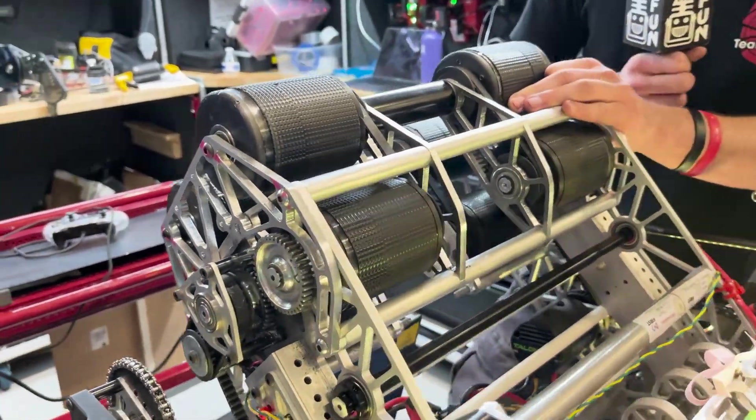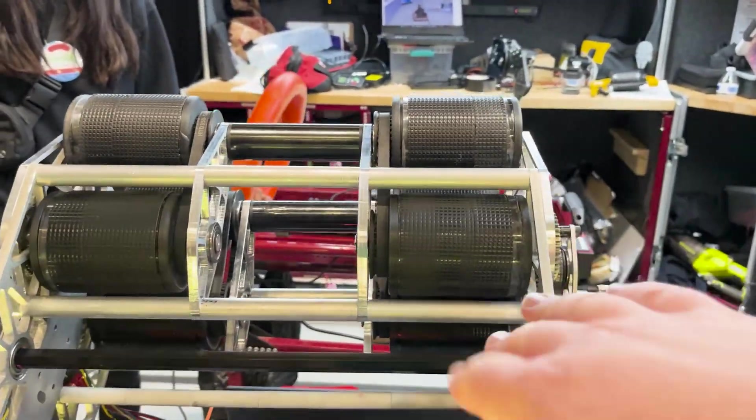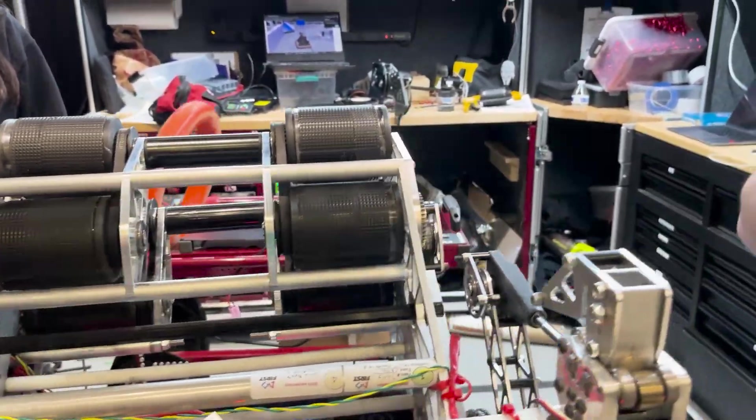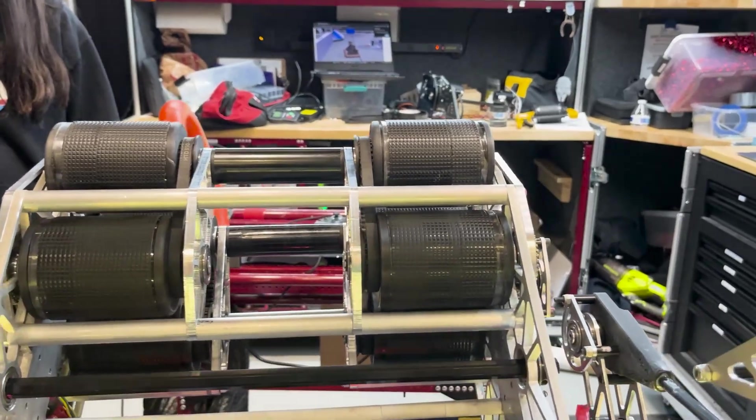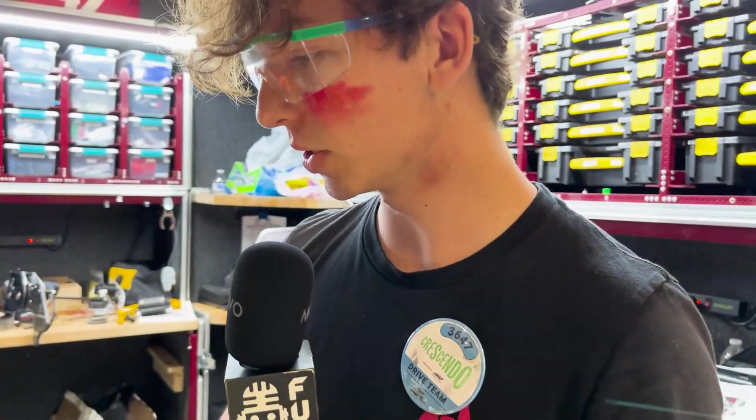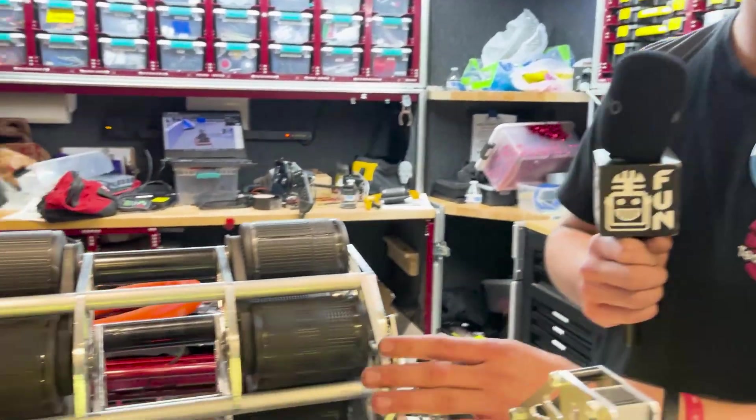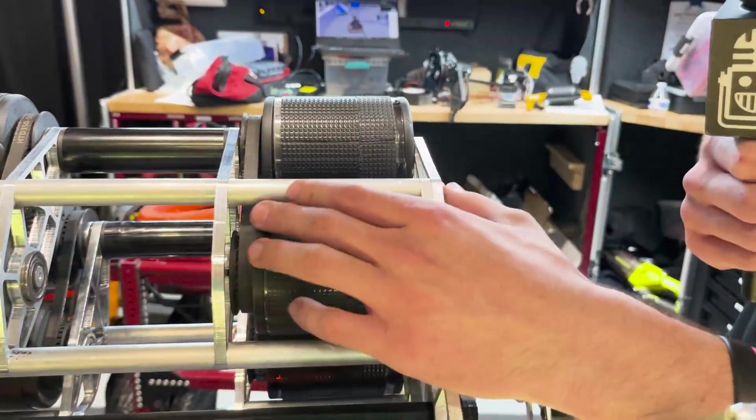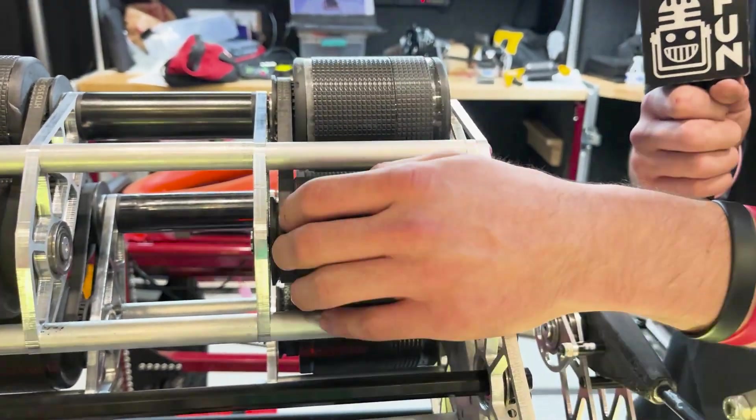Your rollers, that looks like polycarb with grip tape on it. Was that mainly a grip concern or a weight concern, or did you guys notice better shots? Yeah, so initially with the Colsons they were very heavy wheels and they took a long time to spin up and didn't have too much grip on the note themselves. So we switched to these polycarb rollers with 3D printed hubs which allowed us to get very light wheels, and we added the grip tape to have more grip.